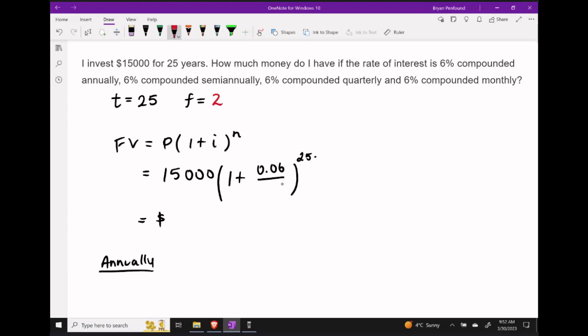That means our periodic interest rate is now 6% over 2, and the number of compounding periods, n, is 25 times 2.